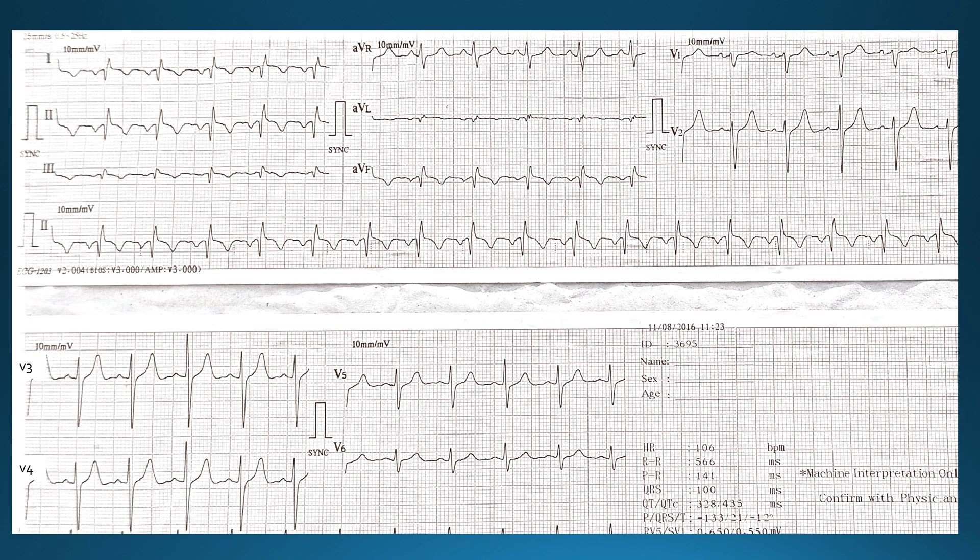This is an ECG of a 35-year-old male who presented with chest pain. He was not having comorbidities. The chest pain was mild to moderate in intensity, and the patient was apprehensive about the chest pain, so the ECG was done.